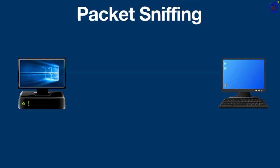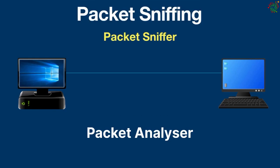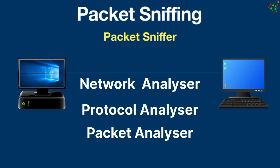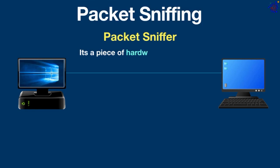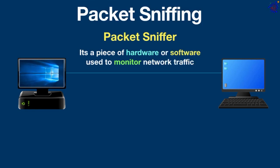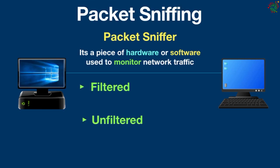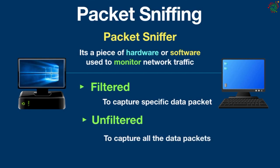Packet sniffing is done using tools called a packet sniffer, also known as a packet analyzer, protocol analyzer, or network analyzer. It is a piece of hardware or software used to monitor network traffic. A packet sniffer can be configured in two ways: filtered — where only specific data packets are captured — or unfiltered, where all packets are captured.